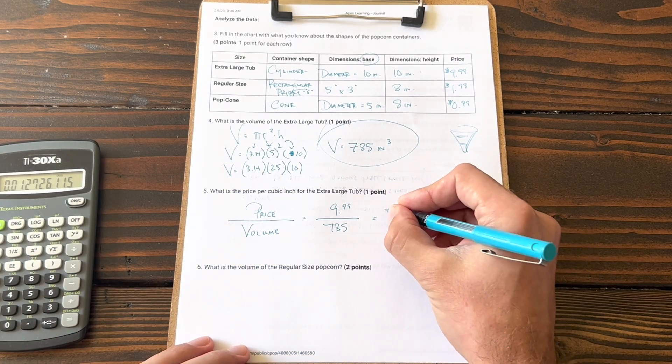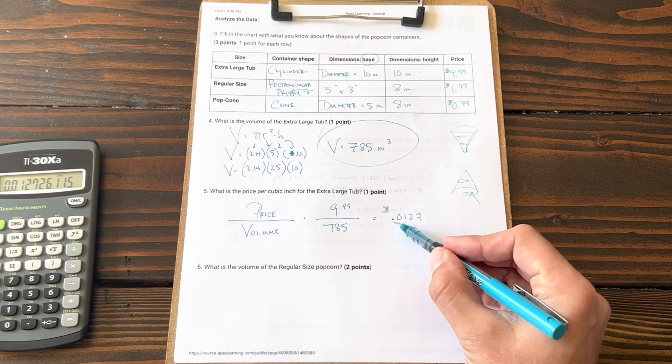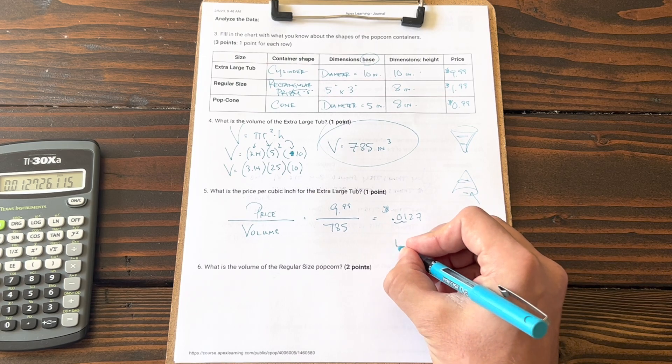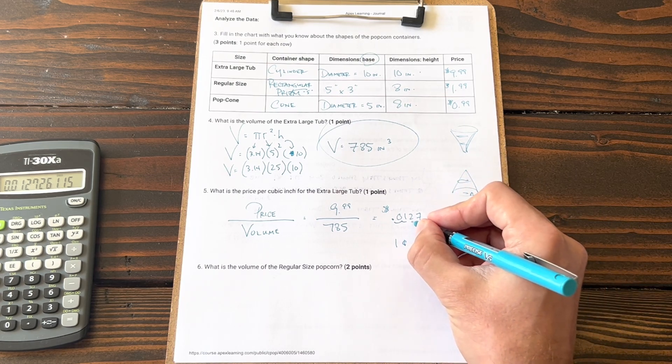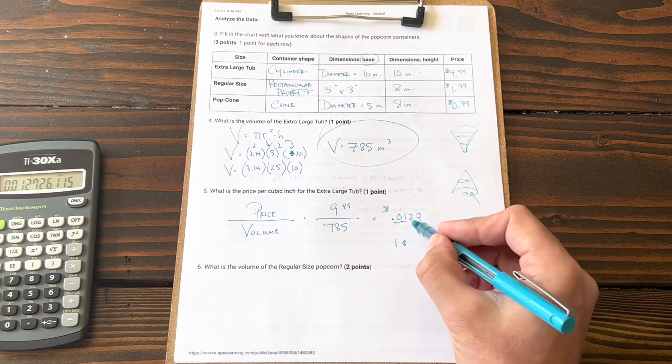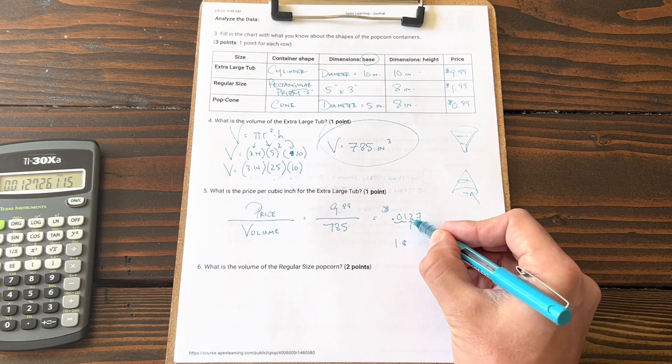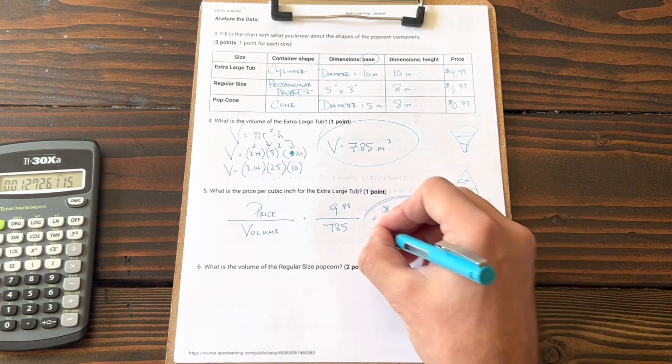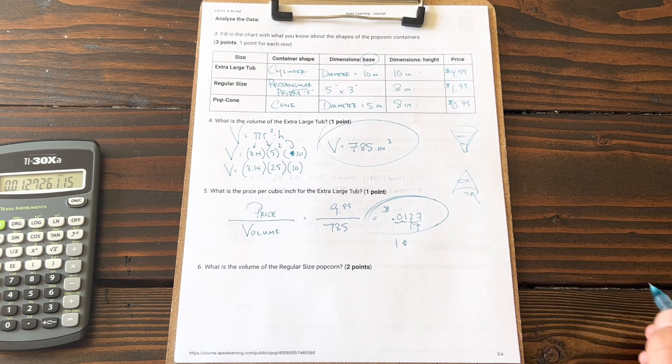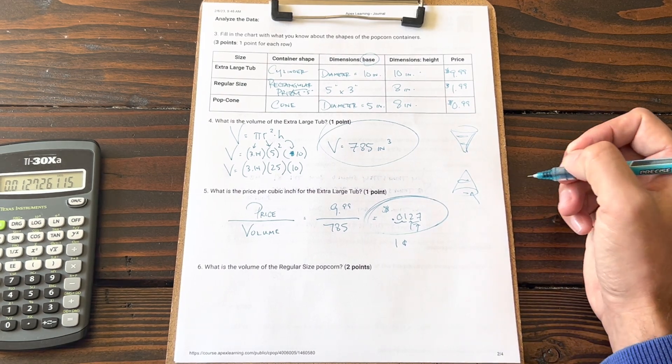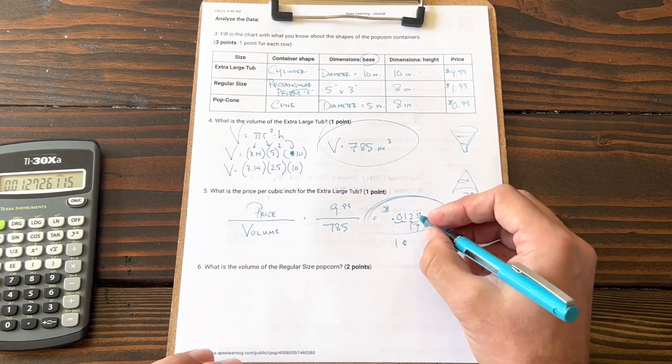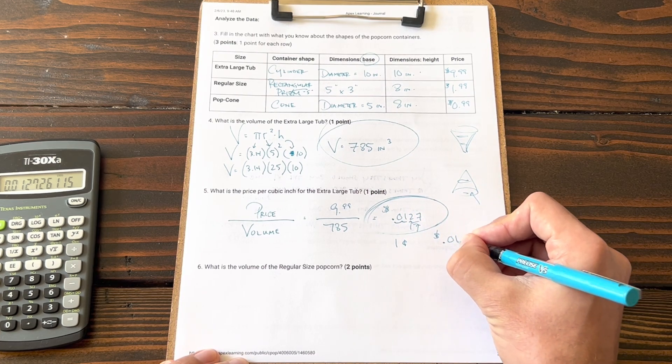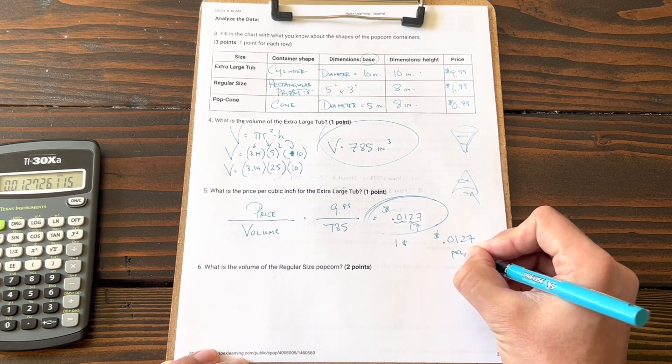We get 0.0127. We're gonna round it, so we get equals 0.0127. So this is about one cent. If we were dealing with money, this would be about one cent, and then you've got kind of a little remainder for that penny. One cent, thousands place is two, ten thousands place is seven. Let's go ahead and keep this as our answer because these extra decimal places are going to come into play when we start comparing the price. The cost here is just over one cent per cubic inch.